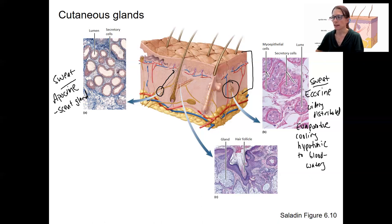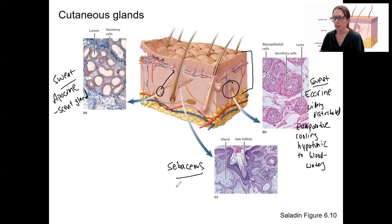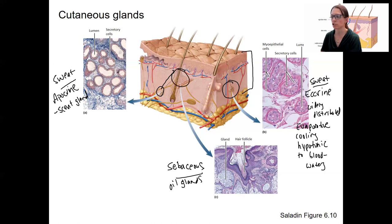Lastly, this last type is actually not a sweat gland. These are called sebaceous glands — they are oil glands. They are associated always with hair follicles, as you saw in the video where I talked about hair and accessory structures. They help to lubricate those hairs.